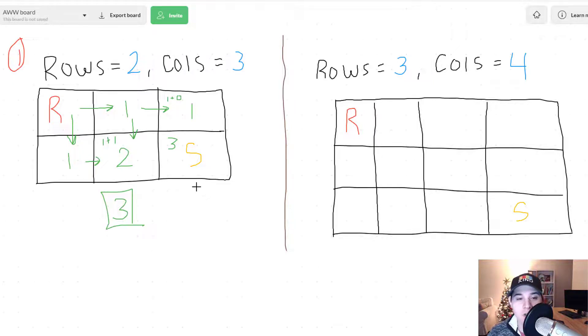So essentially we will iterate over an m by n matrix keeping track of all of these calculations. And by the end of iteration all we have to do is check our bottom right value and that will be the number we return from our function.